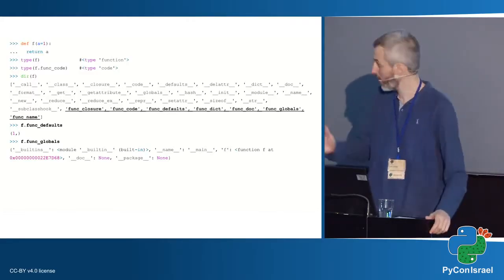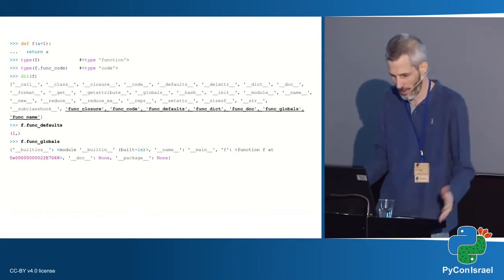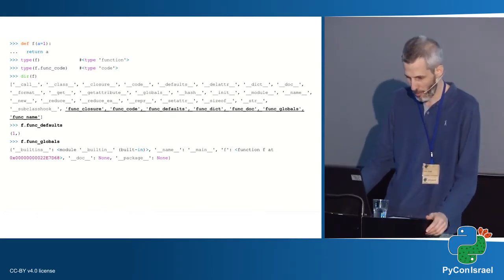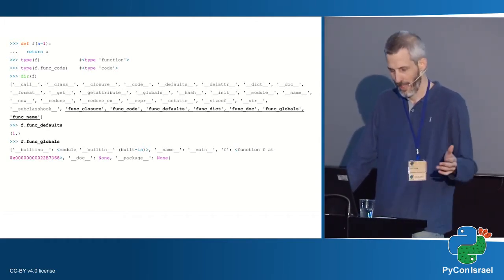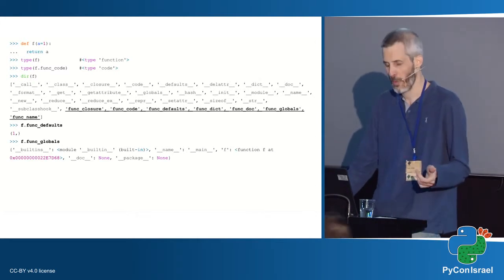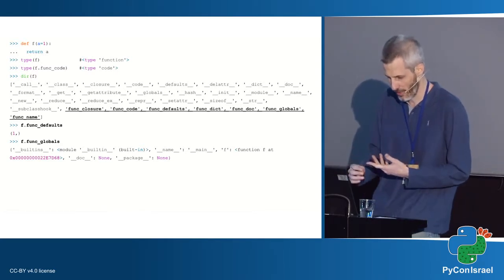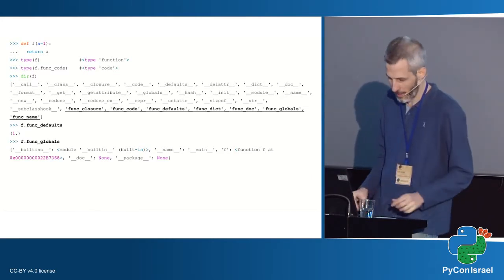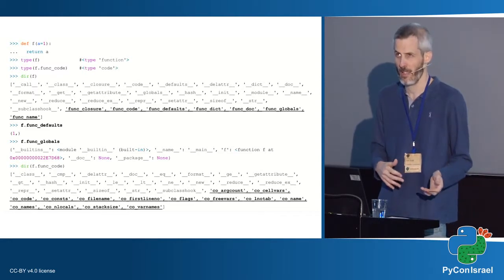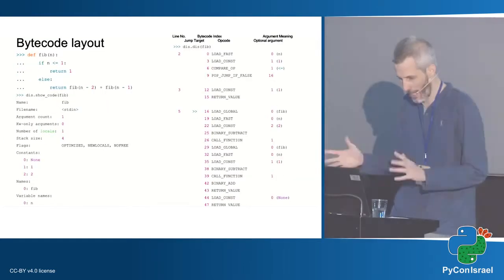If I define function f with argument a and default value 1, the type of f is a function object, and looking inside at f.__code__, that type is actually the code object. In the attribute dictionary of f, we can see the function closure for nested functions, the code object, default arguments, global namespace, doc string, et cetera. And looking at the func_code, you can see a different list of attributes.